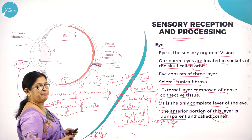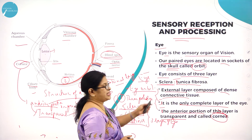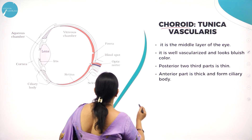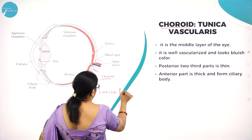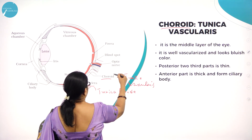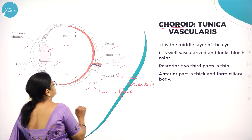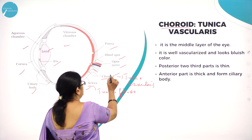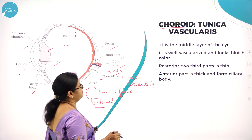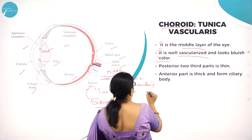Moving on to the next layer: choroid. Sclera is called tunica fibrosa, whereas choroid is called tunica vascularis. Vascularis means blood supply. Choroid is the middle layer of the eye. It is well vascularized and looks bluish in color. Sclera is the external layer, and choroid is the middle layer.